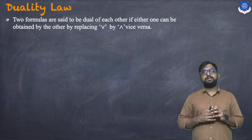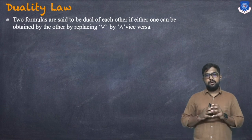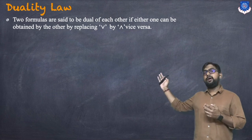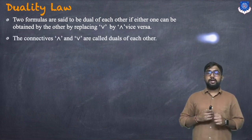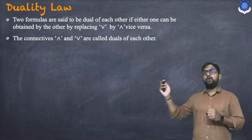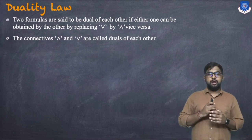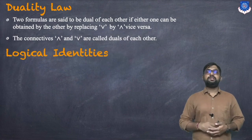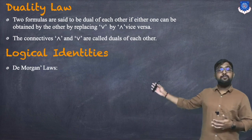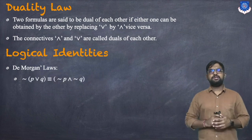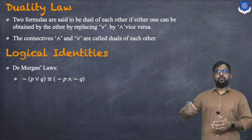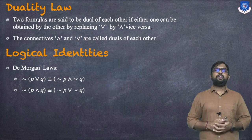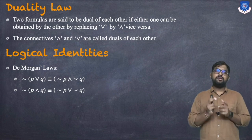Now what is the duality law? Two formulas are said to be dual of each other if one can be obtained from the other by replacing AND by OR and vice versa. The connectives AND and OR — conjunction and disjunction — are called duals of each other. Now let us discuss logical identities, starting with De Morgan's law.